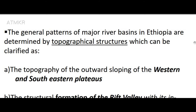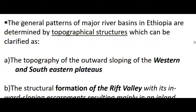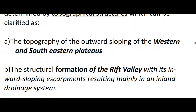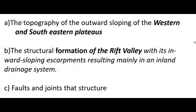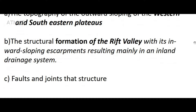The general patterns of major river basins in Ethiopia can be clarified by three factors: (a) the topography of the outward sloping of the western and southeastern plateaus; (b) the structural formation of the rift valley with its inward sloping escarpments, resulting mainly in an inland drainage system; and (c) faults and joints that structure the drainage patterns.